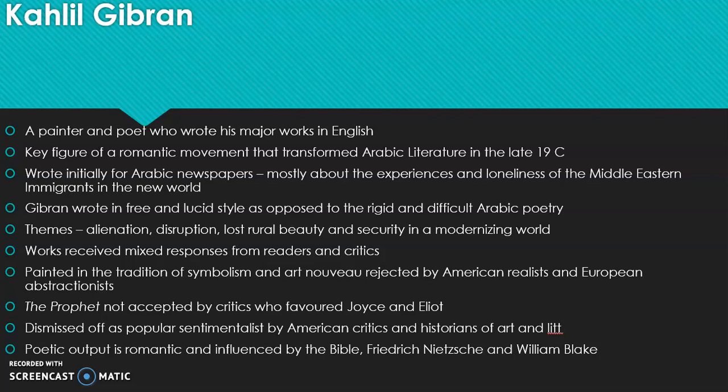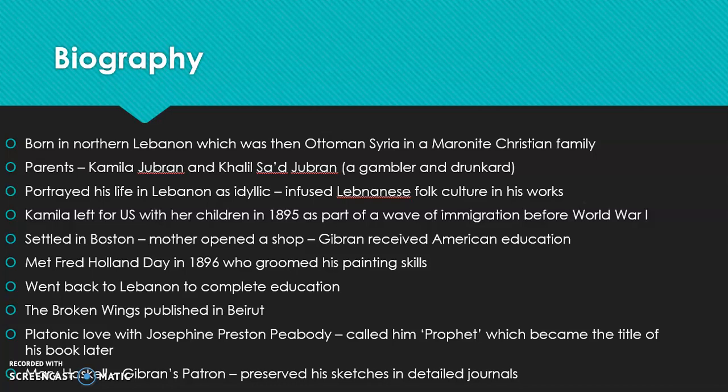The literary output of Khalil Gibran was extremely romantic. You can come across the influence of the Bible, Friedrich Nietzsche, and William Blake in his writings. Going deeper into his life, he was born in the northern part of Lebanon, which was then referred to as Ottoman Syria, and he was born into a Maronite Christian family.